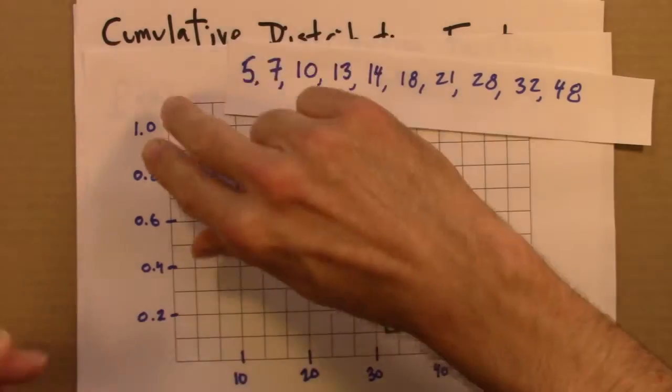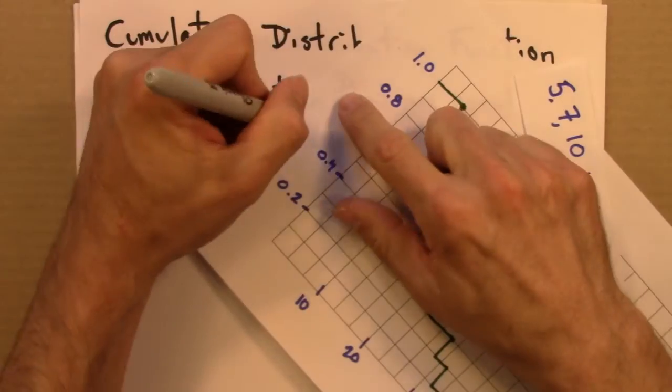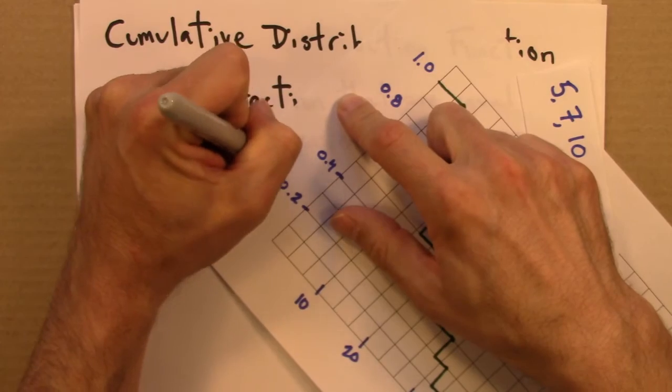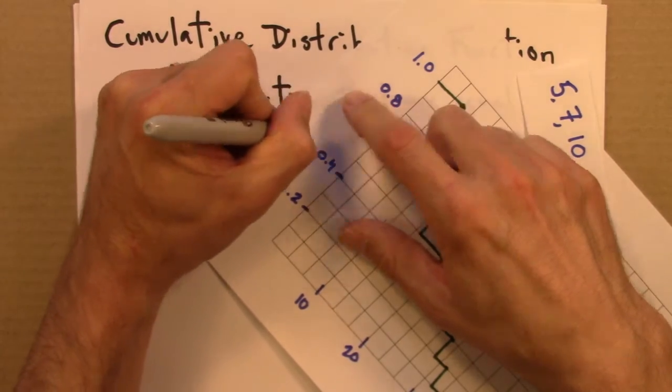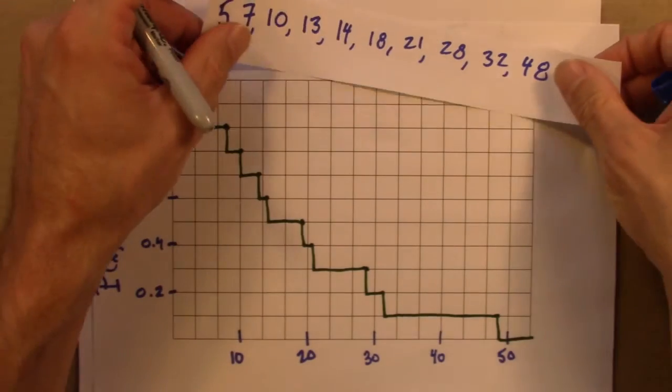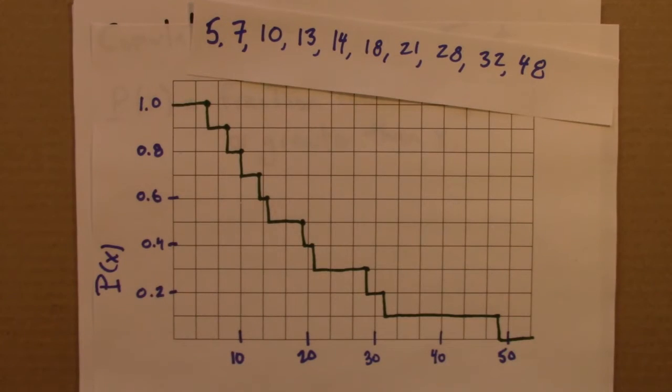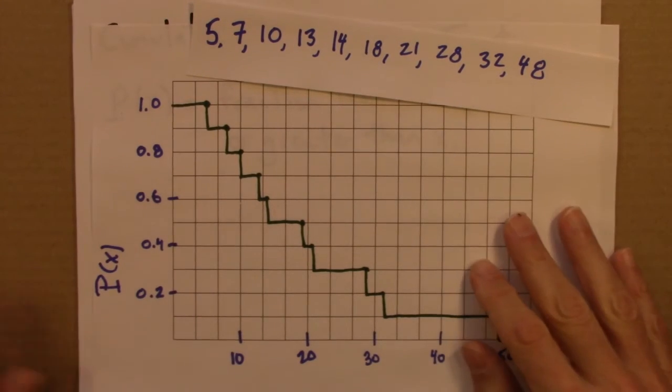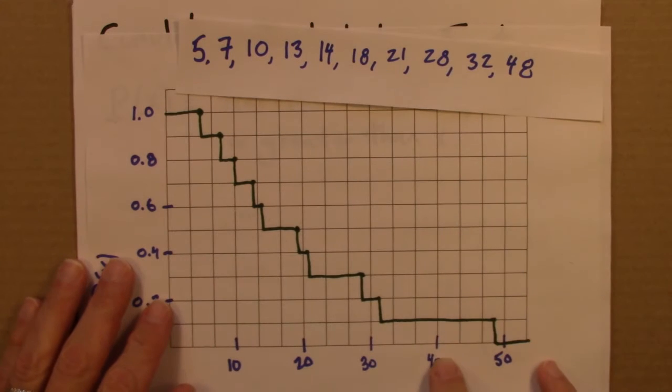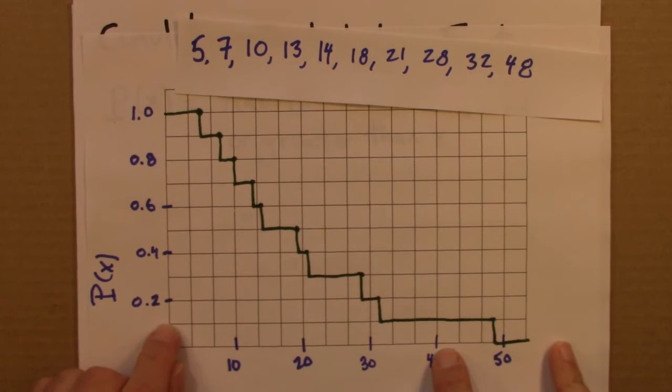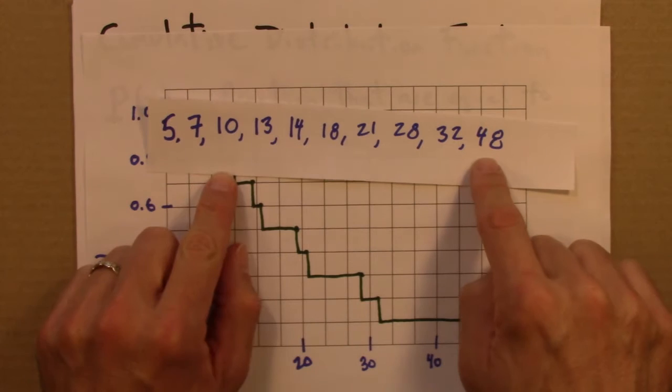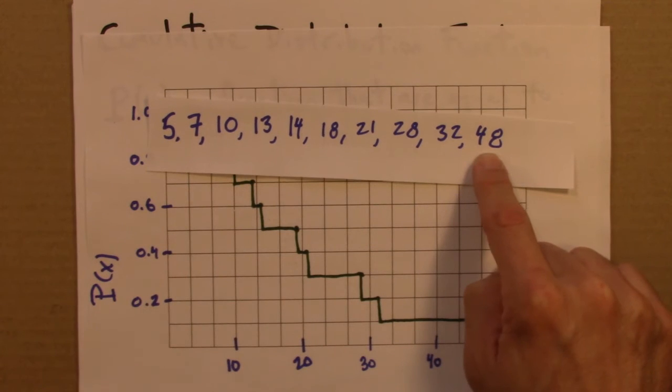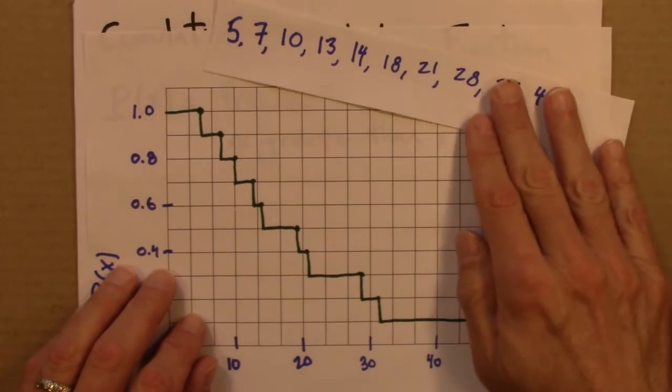So, to be clear, this is a plot of capital P of X, the cumulative distribution function. So, P of 40 is 0.1. What does that mean? That means that 10% of my data is equal to or larger than 40, which indeed is the case. There's only 10%, in this case one data point, that's equal to or larger than 40.